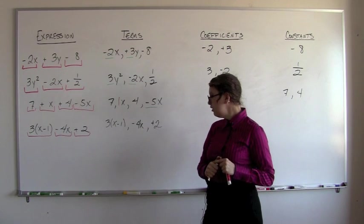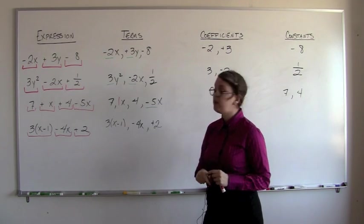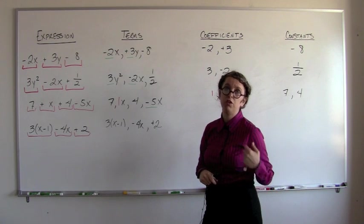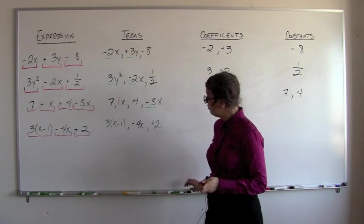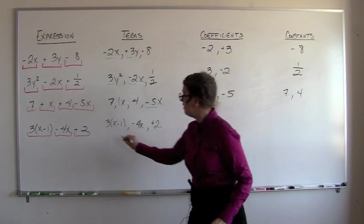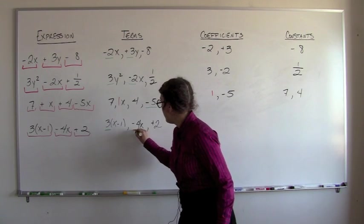So we've got 3 terms, and now we've got to pick out the numerical coefficients. There's 2. The 2 numerical coefficients in this instance are 3 and negative 4.